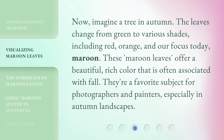Now, imagine a tree in autumn. In autumn, the leaves change from green to various shades, including red, orange, and our focus today, maroon. These maroon leaves offer a beautiful, rich color that is often associated with fall. They're a favorite subject for photographers and painters, especially in autumn landscapes.